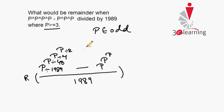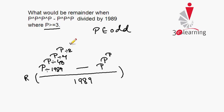For any confusion, please watch the cyclicity remainder concept in the other video. Taking the topmost power: p is odd, so when divided by 2 our remainder is 1. So this complete expression gives a remainder of 1.